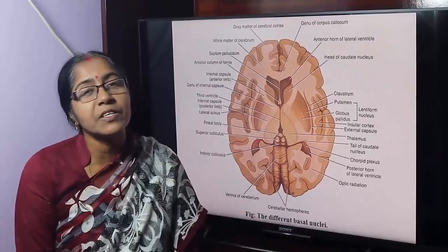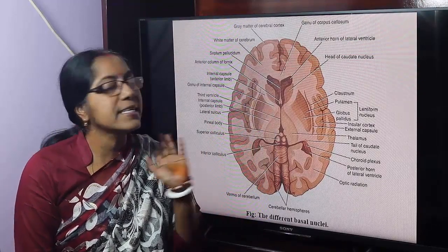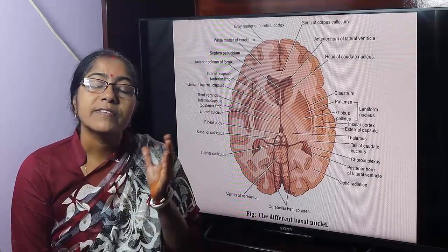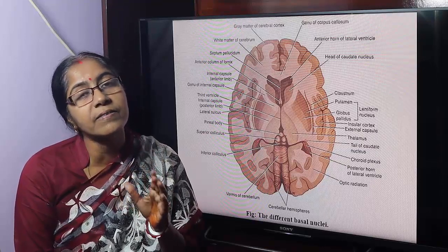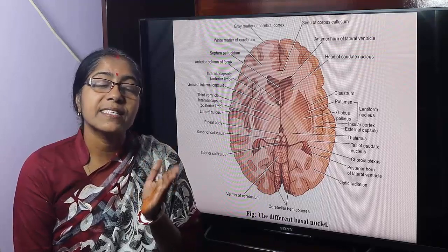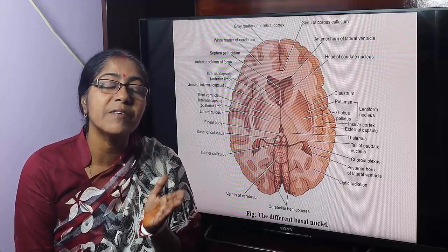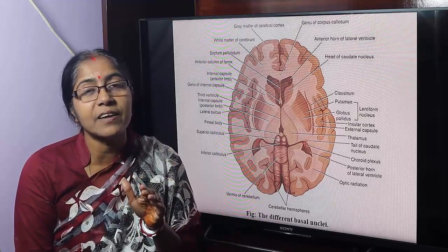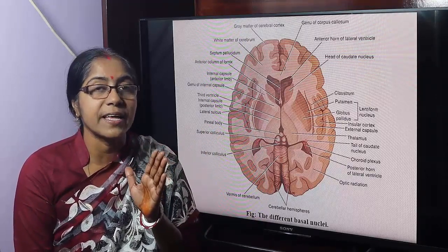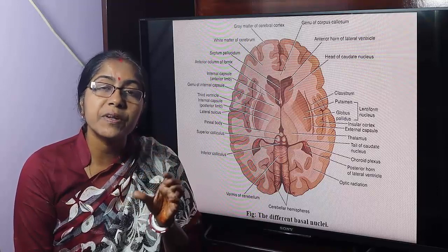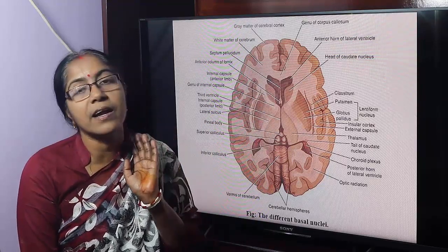What is basal nuclei? They are the subcortical nuclear masses closely related to the internal capsule. A collection of cell bodies within the central nervous system is termed as nuclei. They are the subcortical nuclear masses present in the inferior part of the cerebrum, closely related to the internal capsule.